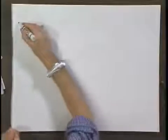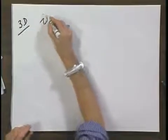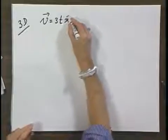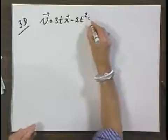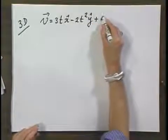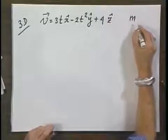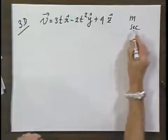Now, let's turn to a more complicated situation, the three-dimensional situation, 3D. Let the velocity vector be 3t x-roof minus 2t squared y-roof plus 4z-roof. And distances are always in meters and times always in seconds.